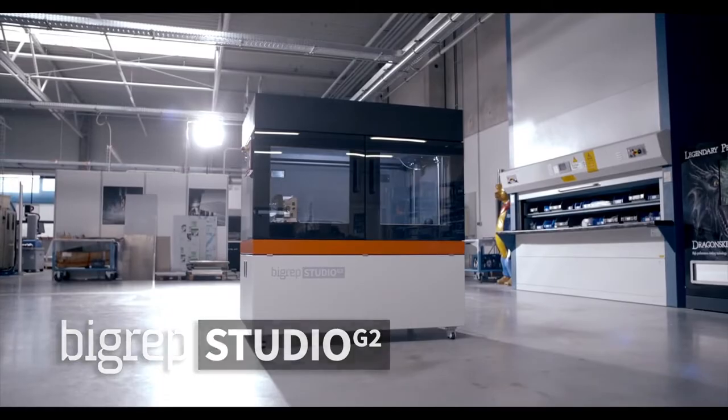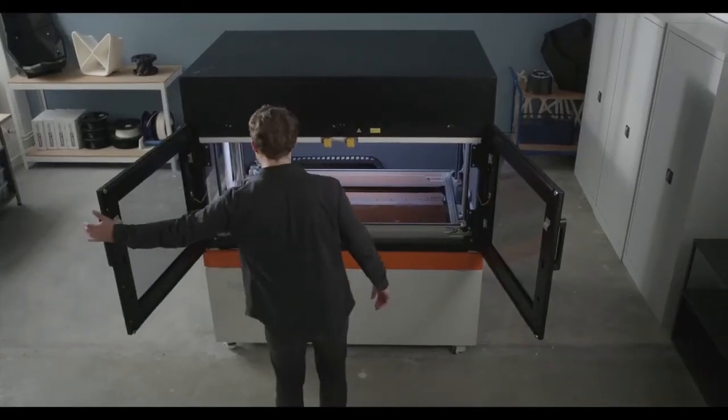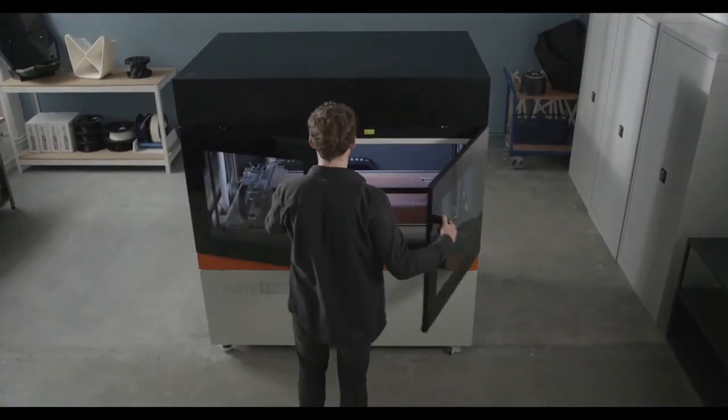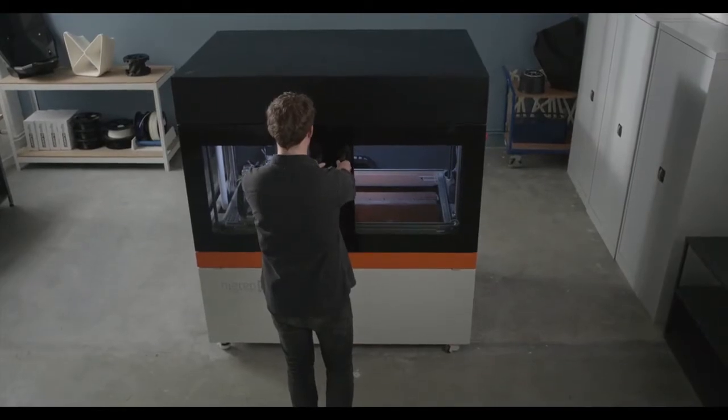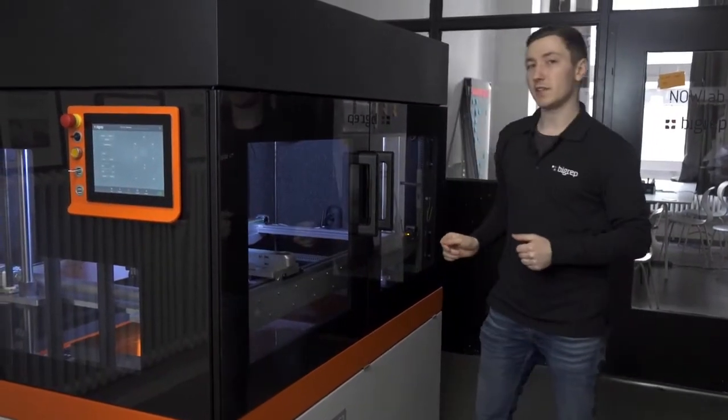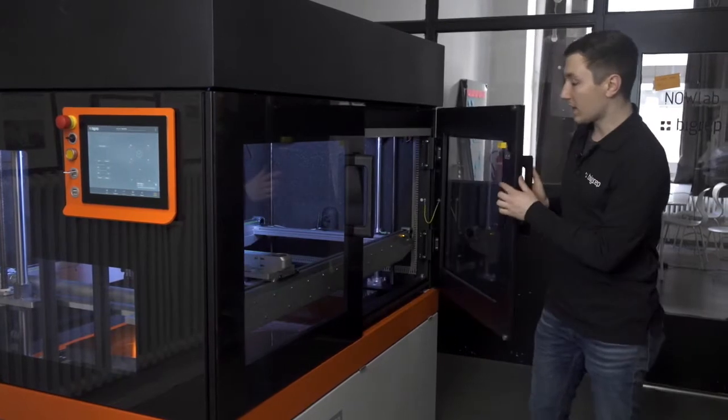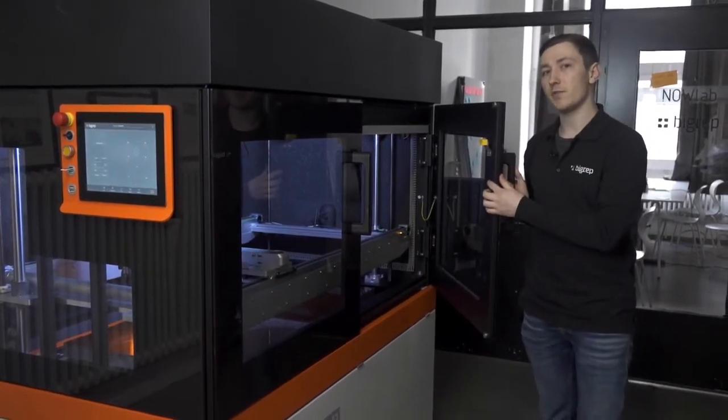The system is fully enclosed, making it both quiet and protected from dust or other airborne obstructions. With front-facing doors that feature safety fail-safes like an auto shutdown upon opening, the G2's enclosure helps ensure operator safety.